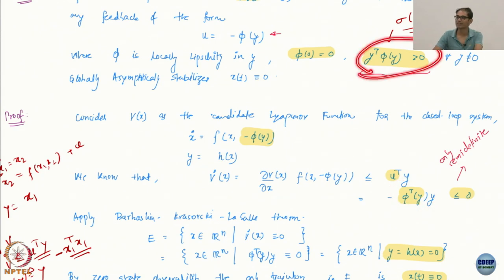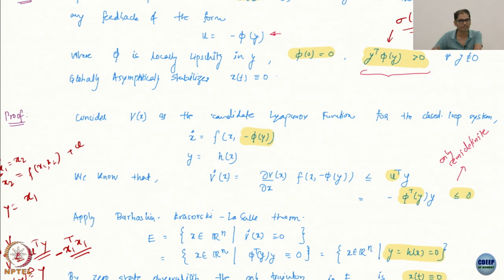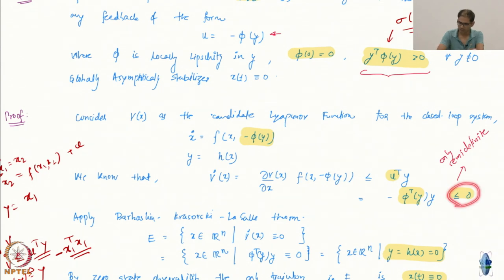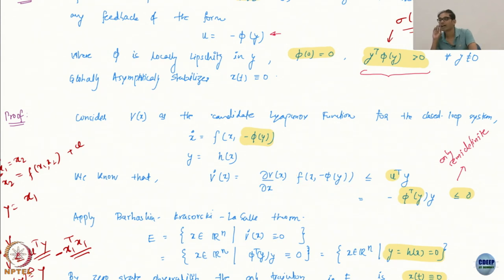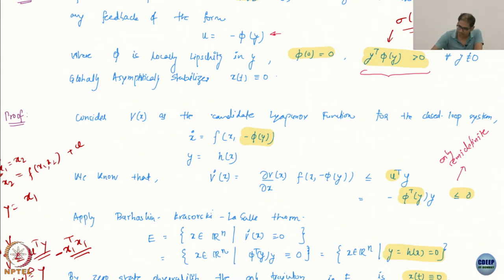By the assumption of positive definiteness of y^T φ(y), V̇ is negative semi-definite — not negative definite. Why is it only negative semi-definite and not negative definite? Because V̇ does not have the entire state x — it only has y, which is less information than the full state. So it is sign definite but not positive definite; it is only negative semi-definite.